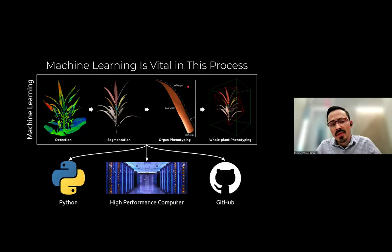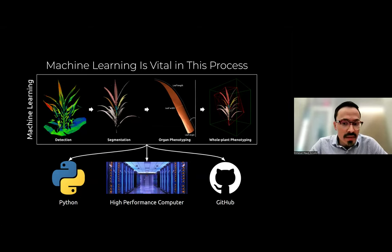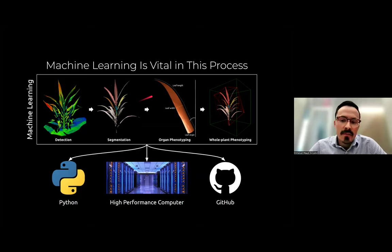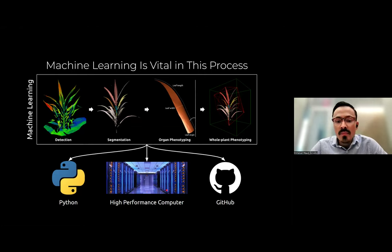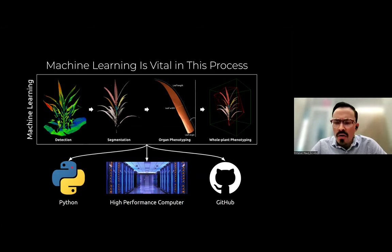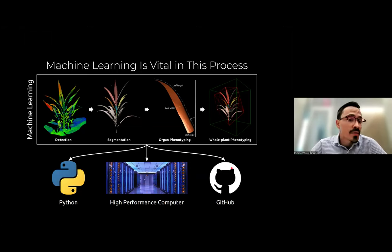Machine learning allows us to extract these insights without having to write the computational code to do these tasks. You might just take some data and train the model to detect individual plants, segment those points, and phenotype that information. Together with machine learning, a high-performance computer or cloud computing platform is needed to run efficiently, along with Python or another programming language, and GitHub to document and share the machine learning workflow.